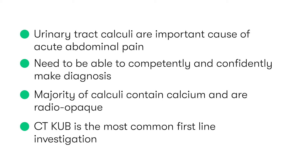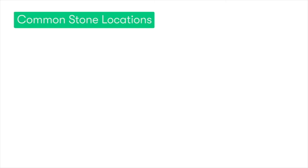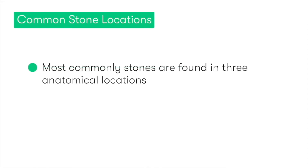Before we go on to look at CTKUBs, we first need to appreciate the three common locations where urinary tract calculi are found. The most common anatomical locations where urinary tract stones are found are at three points along the urinary tract where the urinary tract becomes its most narrow.